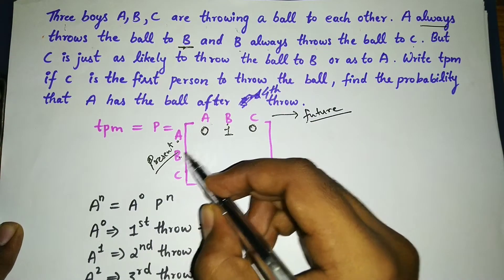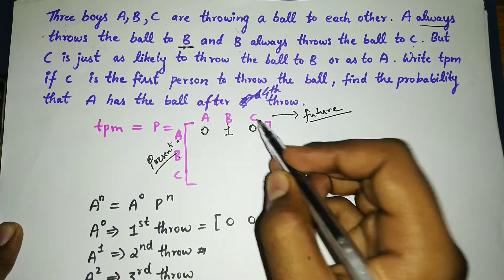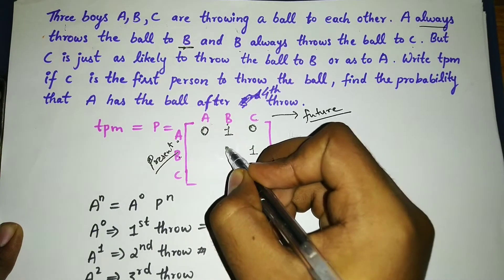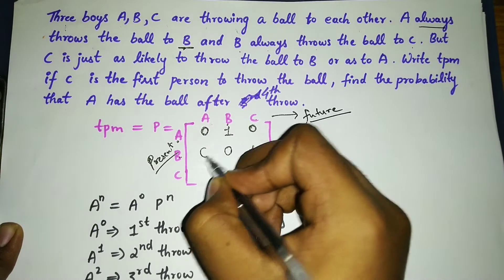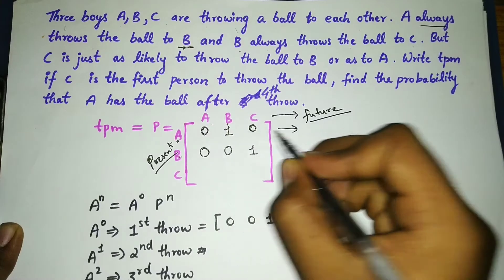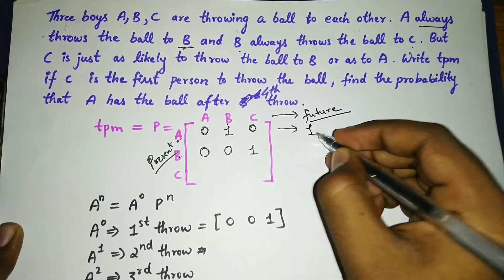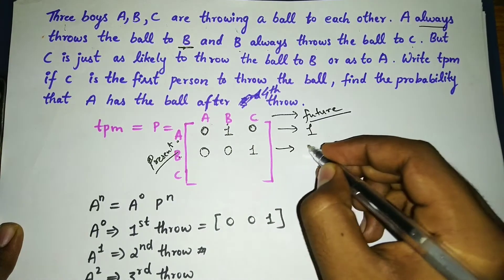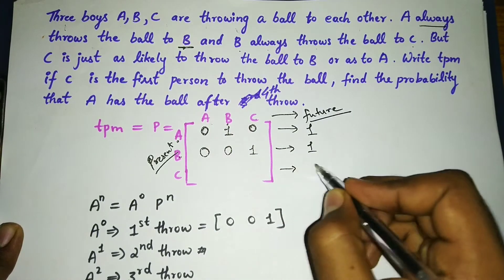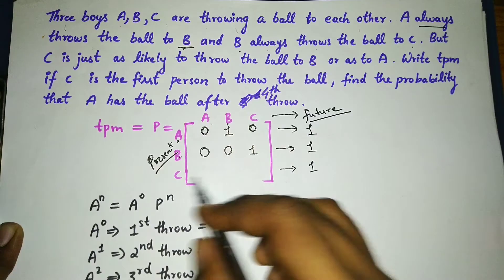Next, B always throws the ball to C, so that probability is 1 and the rest are zero. Remember, when you add up the three elements in a row, the sum should always equal 1.